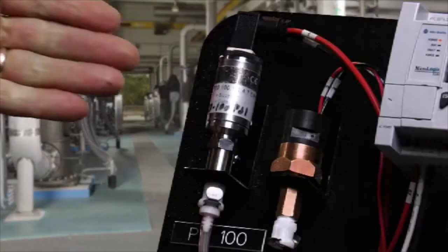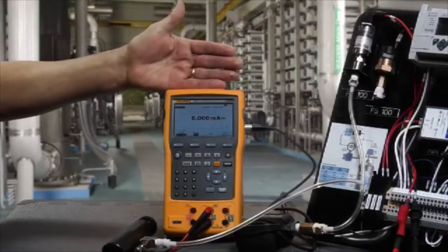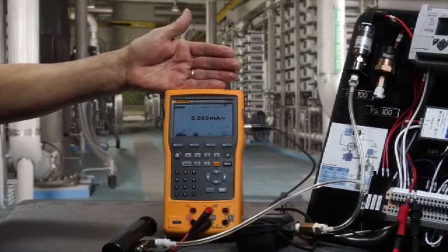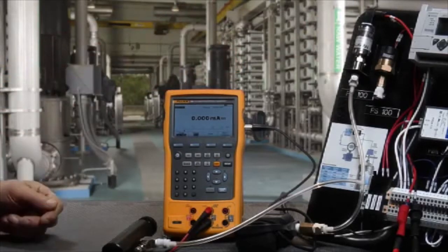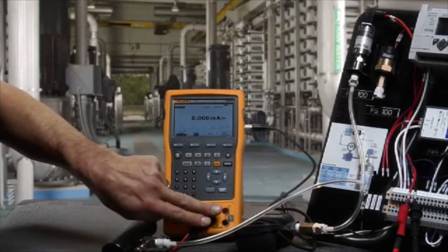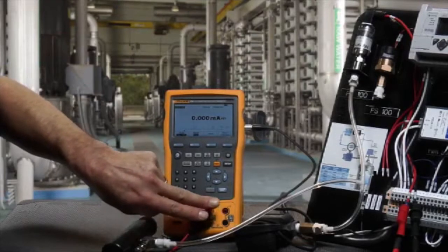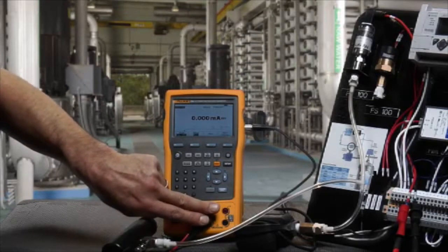Let's go through how to calibrate a pressure transmitter using the Fluke 754 documenting process calibrator. In this example, we're going to measure the milliamp signal drawn by the pressure transmitter as well as powering it with the internal loop power supply.